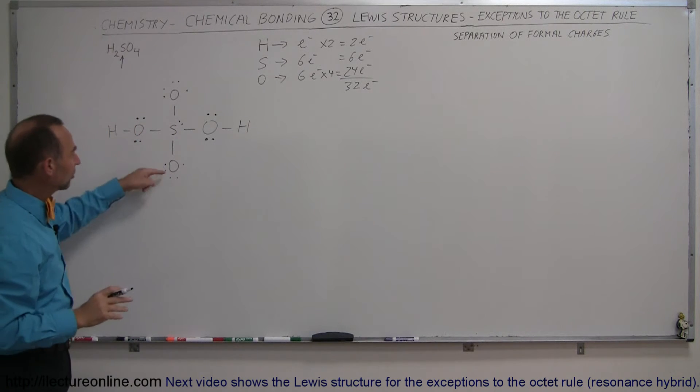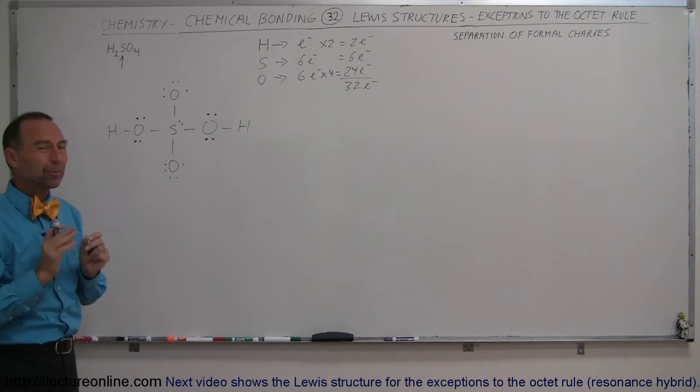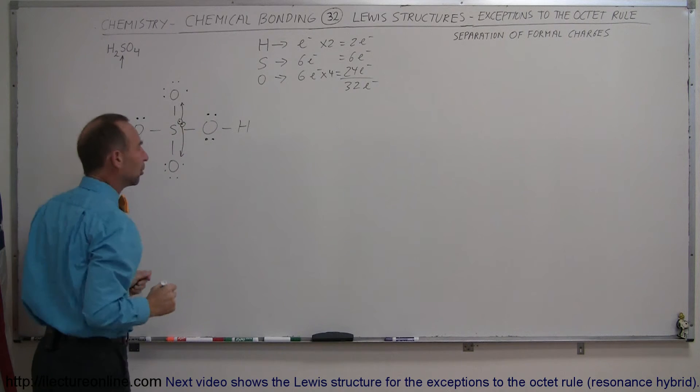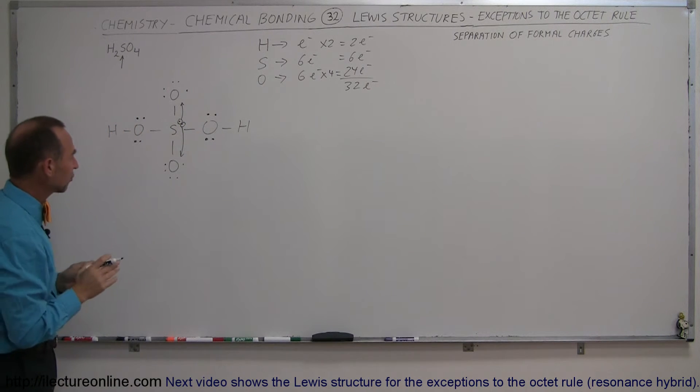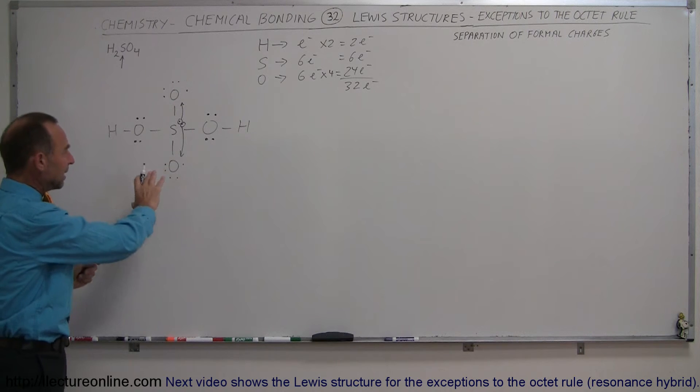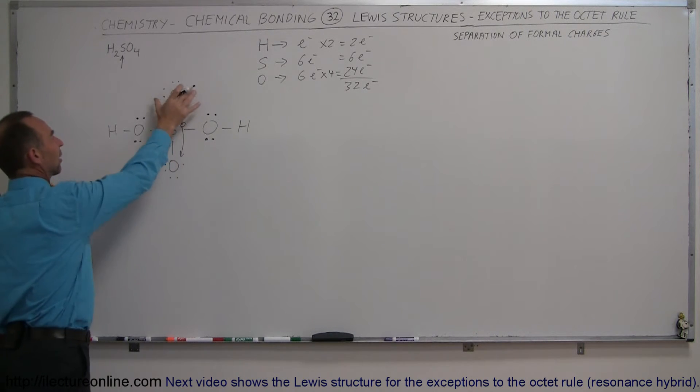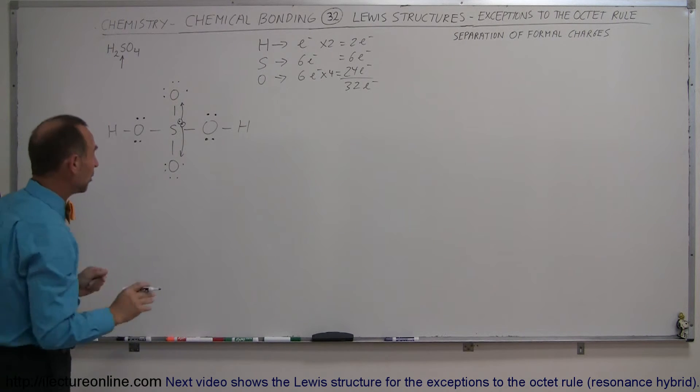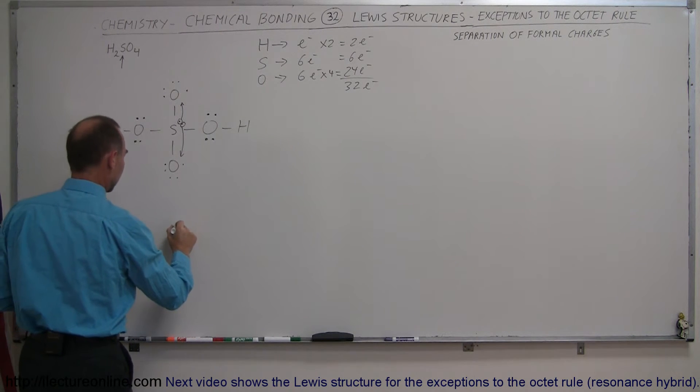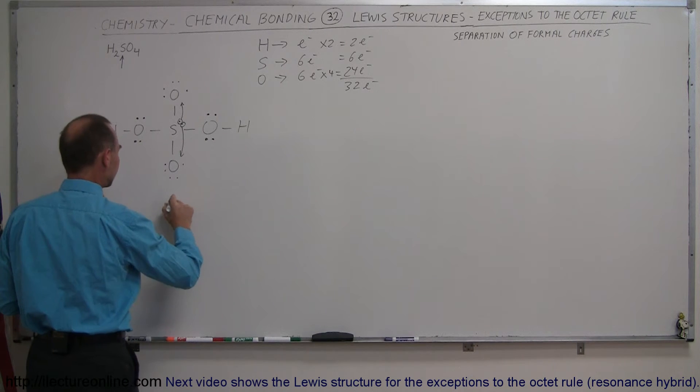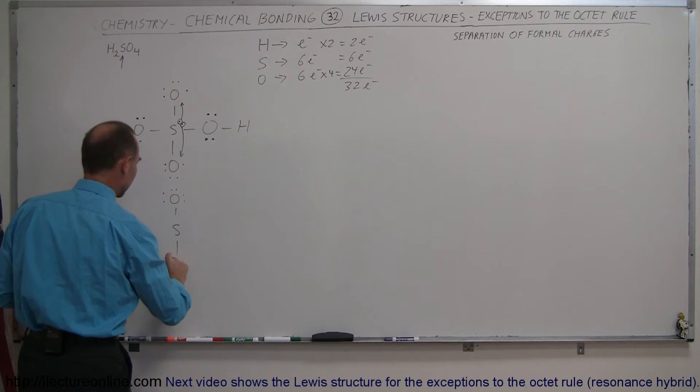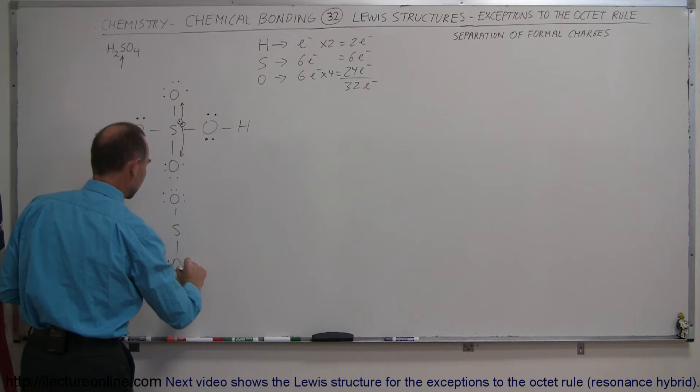Now since oxygen is more electronegative than the sulfur, what's probably going to happen is that these two electrons will get drawn one to each oxygen, because oxygen will have a stronger pull on those electrons, to form six valence electrons around each of these oxygens. But let's see in a moment what happens when we do that.